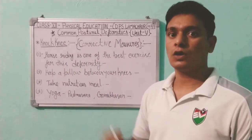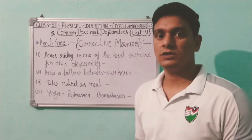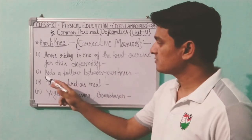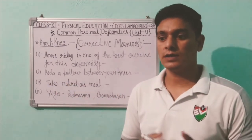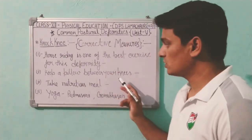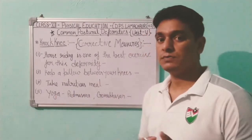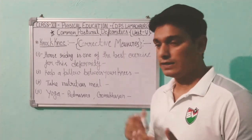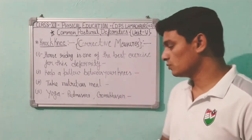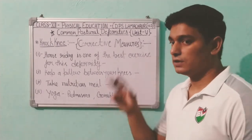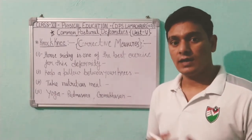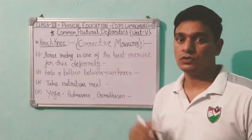The corrective measures for knock knee are: first, horse riding is one of the best exercises for this deformity. Next, keep a pillow between your knees whenever possible — you can do this at night while sleeping. Next, take nutritious meals, as proper nutrition helps with all deformities. In yoga, especially padmasana and gomukhasana are very helpful for this deformity. These are the corrective measures for knock knee.